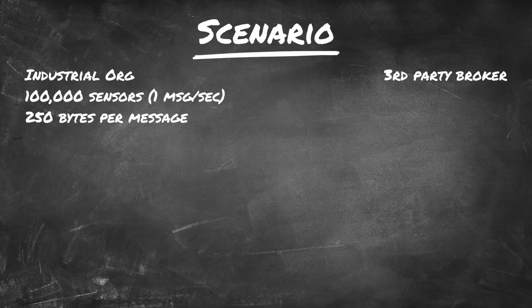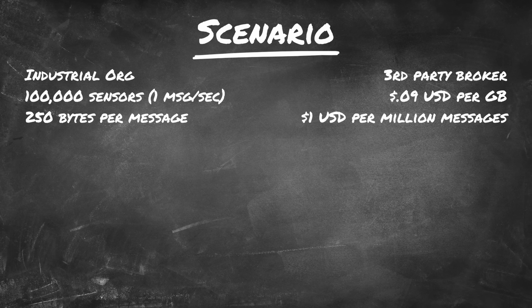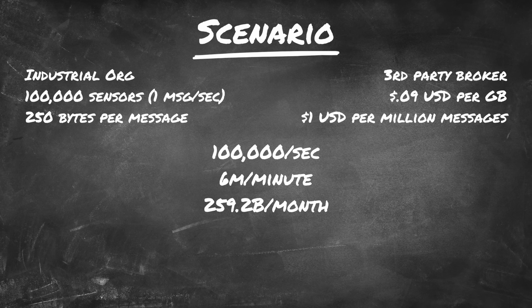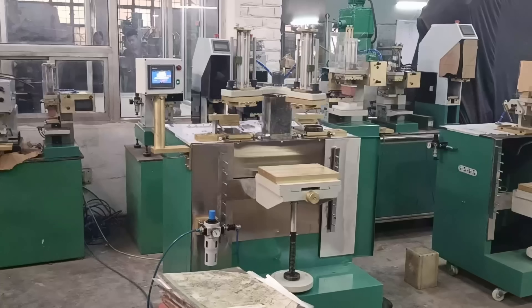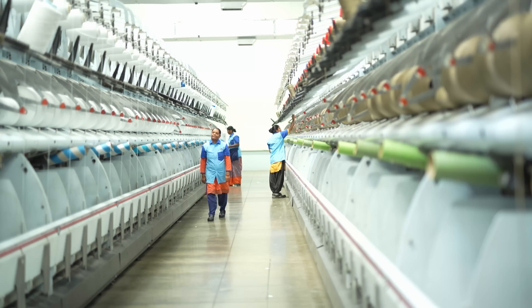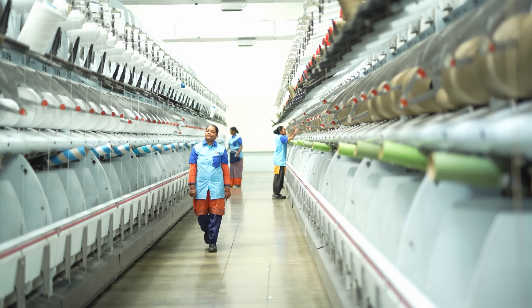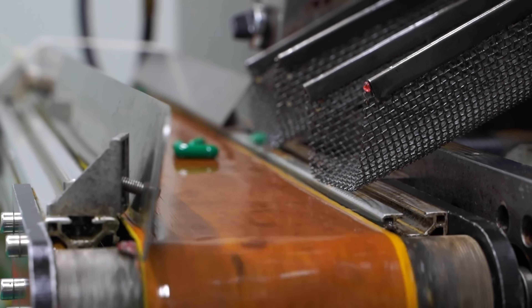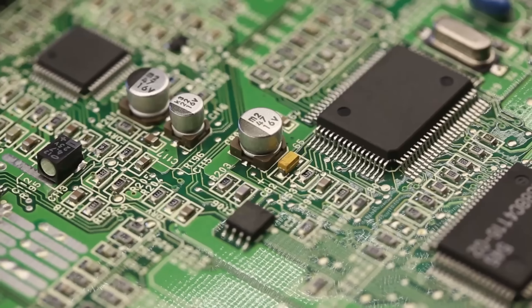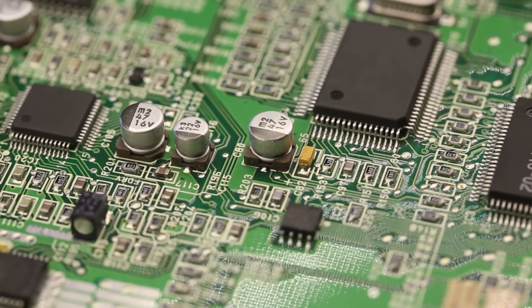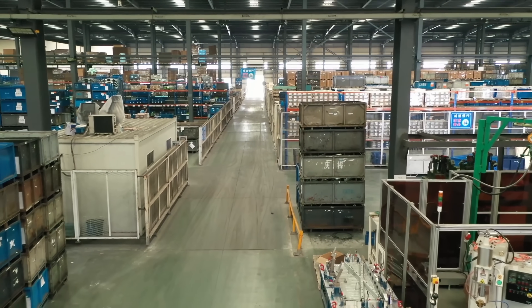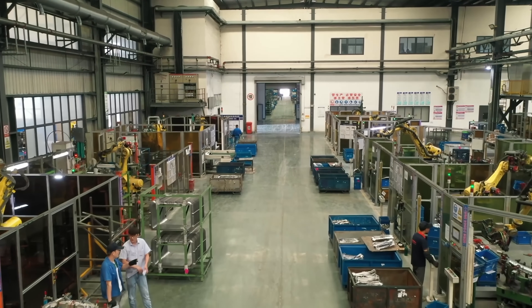In this scenario, we use a third-party broker that charges about 9 cents per gigabyte for data transferred, and about $1 per million messages sent to the broker. At scale, we're sending 100,000 messages a second, 6 million a minute, or 259.2 billion messages a month. That may sound like a lot, but in an industrial setup you may have hundreds or thousands of machines, each with 10 to 100 sensors detecting everything from throughput to temperature to vibration — even simple things like power status. With so many sensors and data points, the number of messages generated adds up quickly.